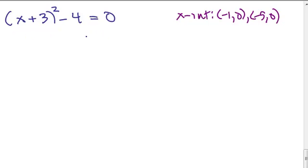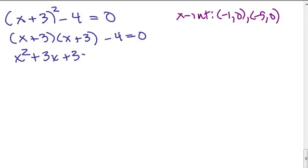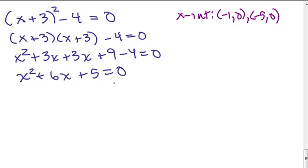Another method for solving a quadratic is you could multiply this out. This is (x+3) times (x+3) minus 4 equals 0. If I do the FOIL method, I get x^2 + 3x + 3x + 9 - 4 = 0, and that gives you x^2 + 6x + 5 = 0. Now we have a quadratic in standard form, and to solve that, you can either factor or use the quadratic formula.